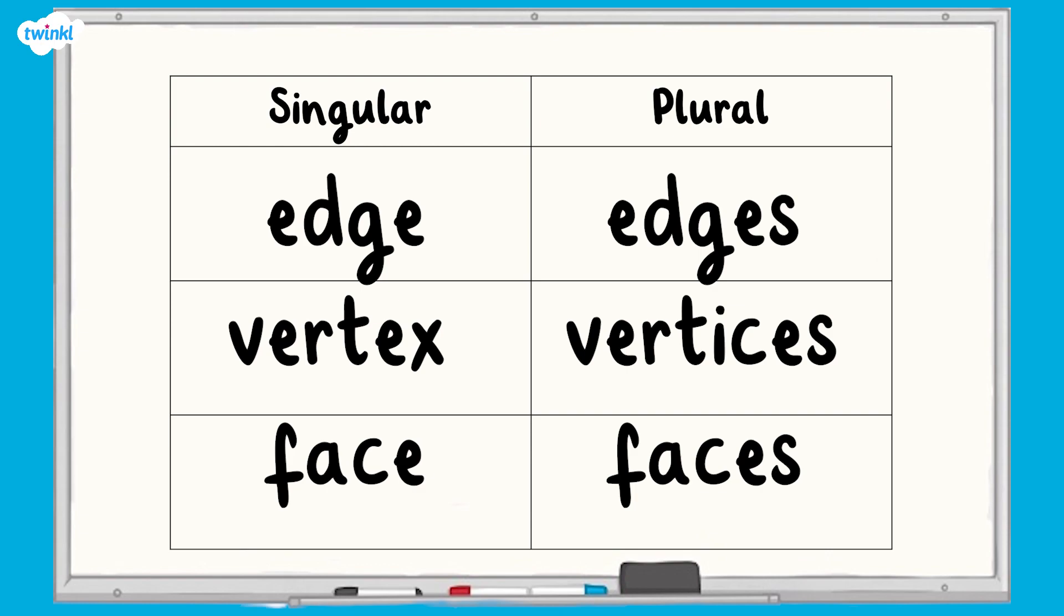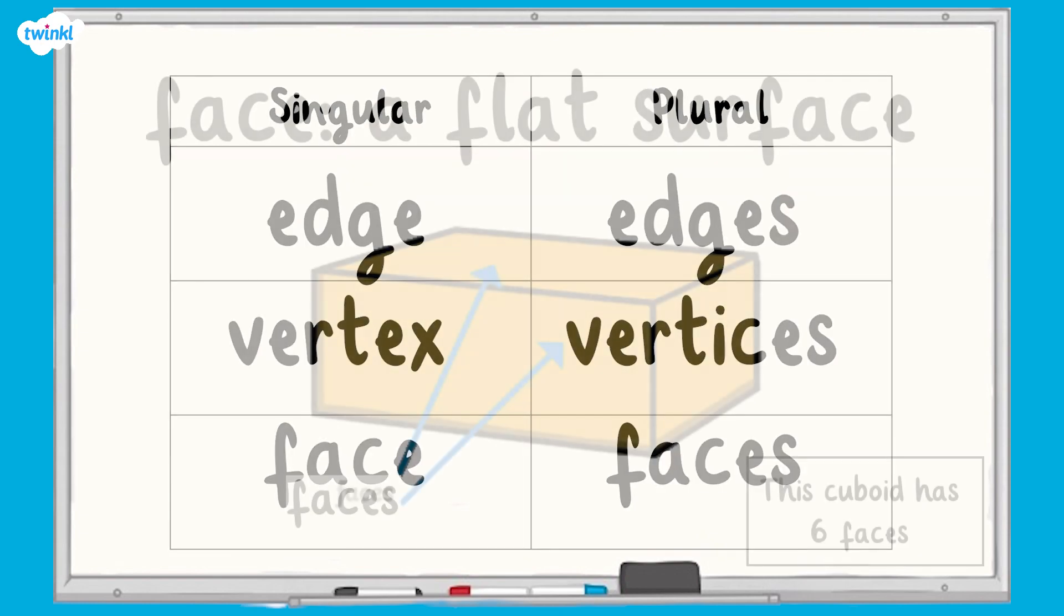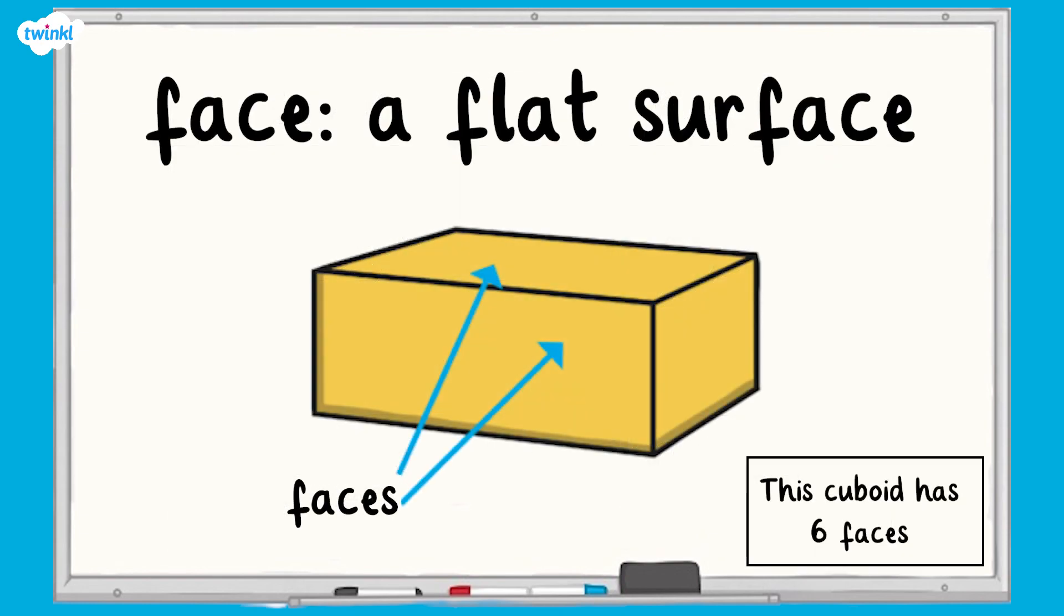A face is one of the 2D plane surfaces of a 3D shape. Faces are flat. This cuboid has six rectangular faces.